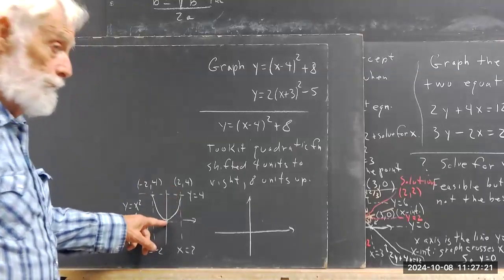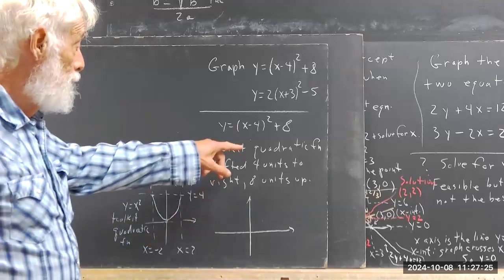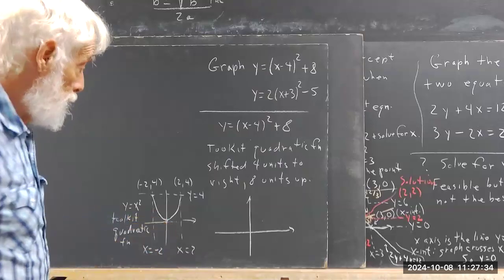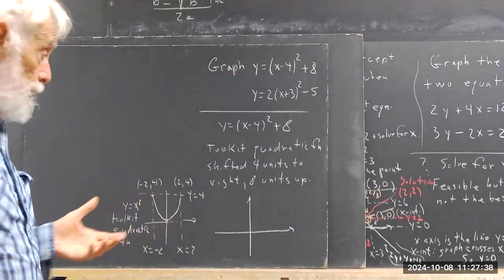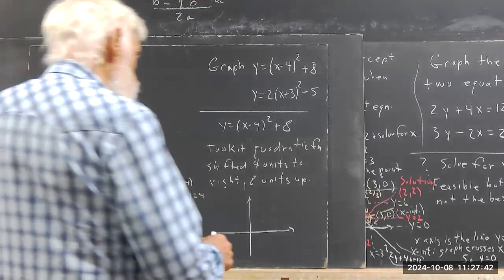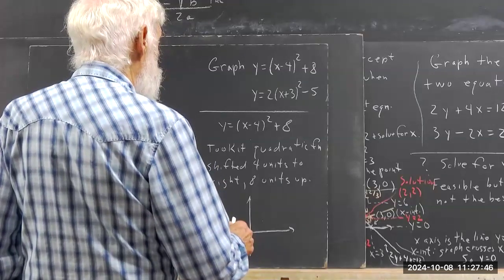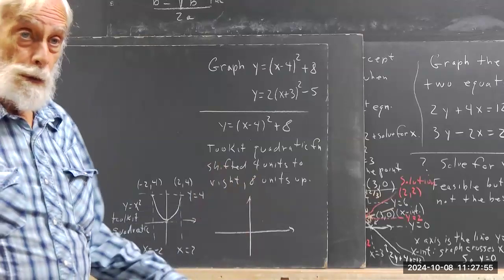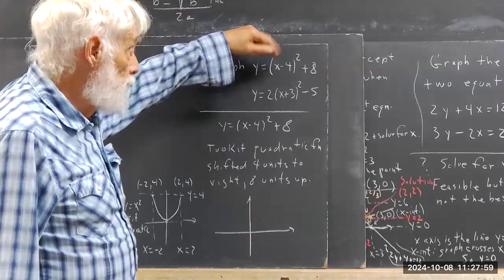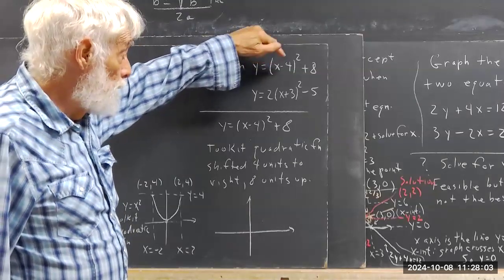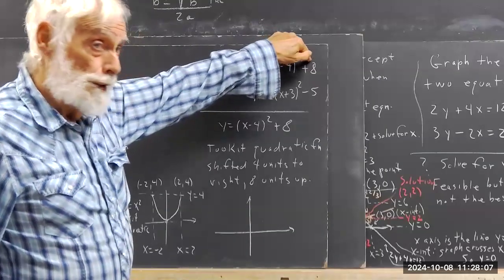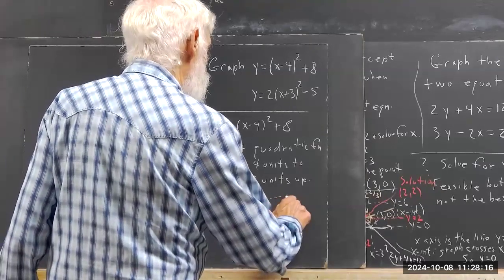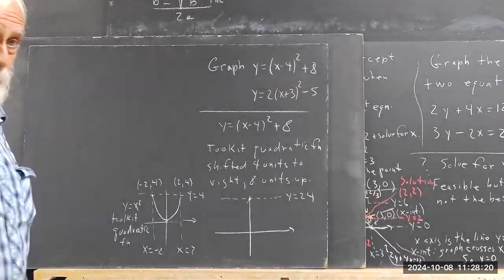We're going to take this graph and shift it so the vertex moves four units to the right and eight units up. Every point moves four units to the right and eight units up. We want to focus on the vertex because it's one of the most important points on the graph. We know there's going to be a y-intercept when x equals zero. If x equals zero, you're going to square negative four to get 16 and add that to eight to get 24.